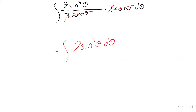But instead of just getting 1 — which was nice and integrated to just theta — we get 9 times the sine cubed of theta. So what should I do now? We split it up and make it sine squared times sine. Exactly correct — this is an odd power of the sine, and we know how to deal with odd powers of the sine.